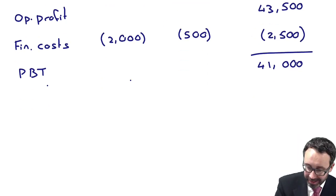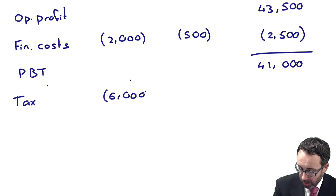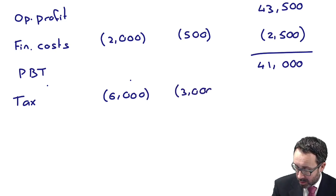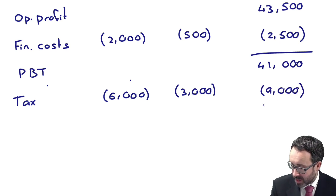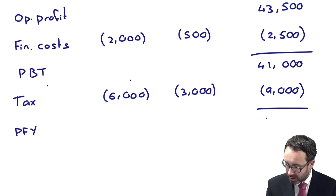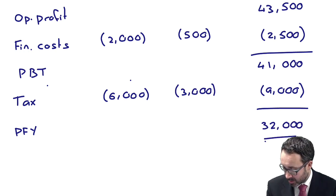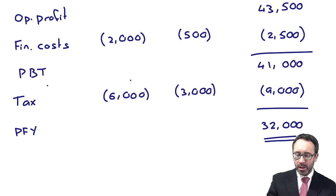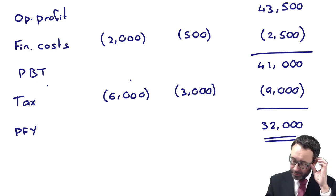If I then go through and look at my tax figures - 100% of the parent's is 6,000 and it's 3,000 for the subsidiary, which gives me 9,000. And that gives me my profit for the year which is 32,000. So that is my group profit for the year.